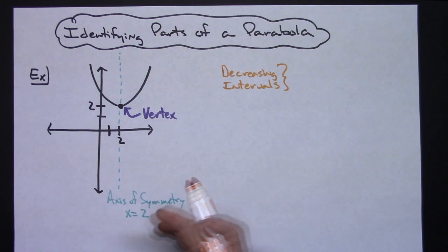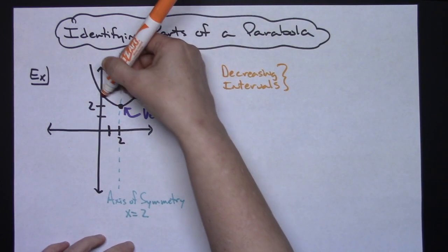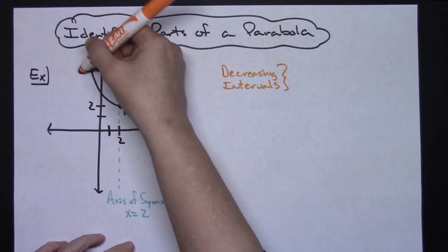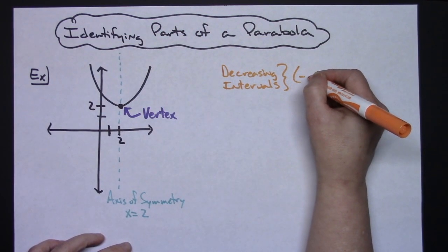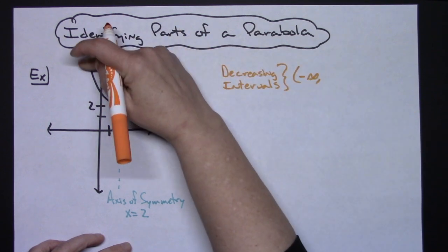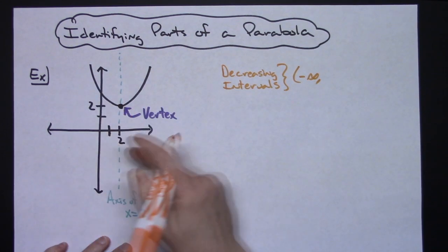How far left does this parabola go? Well, it goes all the way to negative infinity, so it goes from negative infinity and it decreases until it gets to x equals 2.